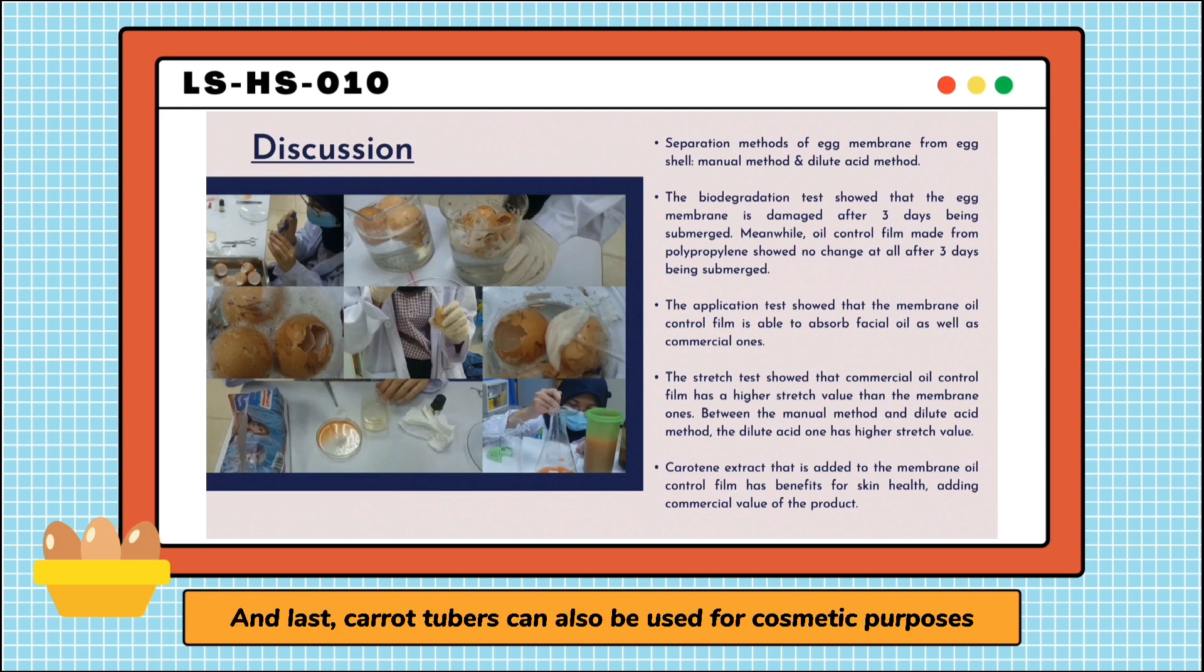And last, carrot tubers can also be used for cosmetic purposes, namely to treat facial skin beauty, nourish hair, and others. Carotene, found in carrots, is useful for maintaining skin moisture and slowing down the appearance of wrinkles on the face.